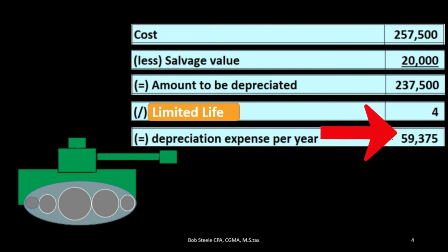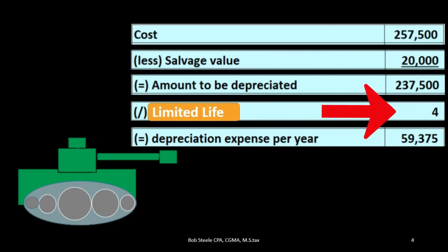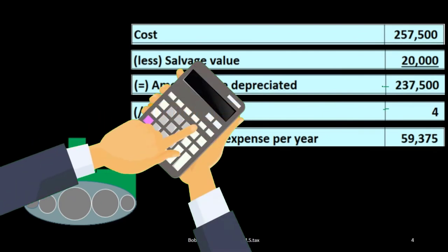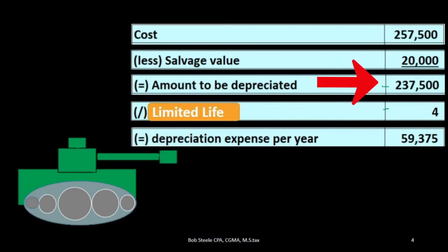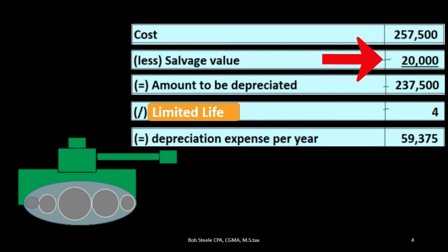That means we're going to depreciate $59,375 each year for the limited life of four years, meaning we will have total accumulated depreciation at the end of the limited life of $237,500, leaving us with a book value equal to the salvage value of $20,000 at the end of the limited life.